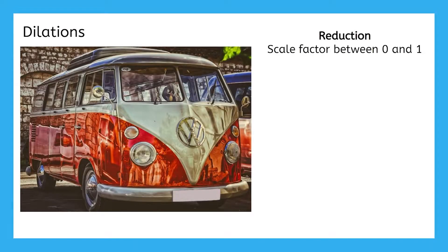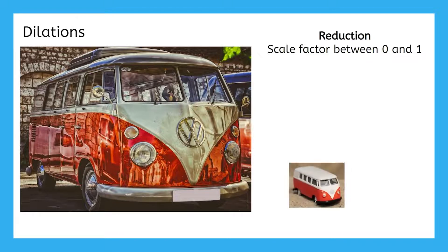Another example of dilations in real life is toy cars. Let's look specifically at this van — it's been reduced in size to become this toy van. The scale factor is what we multiply the pre-image by to get the image. And if our scale factor is between 0 and 1, the image will be smaller.